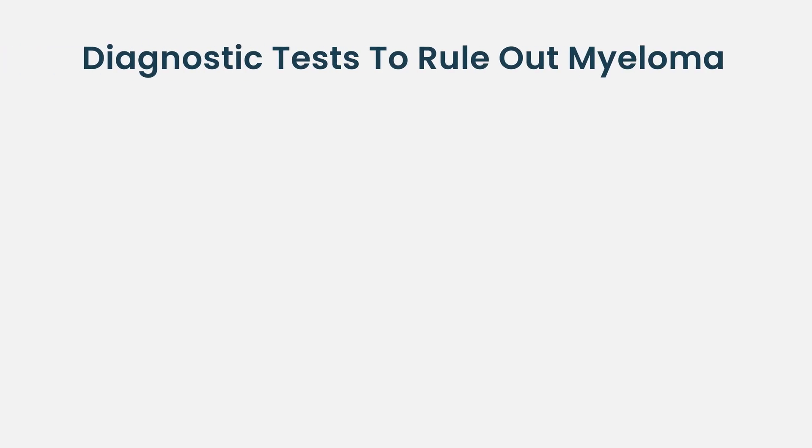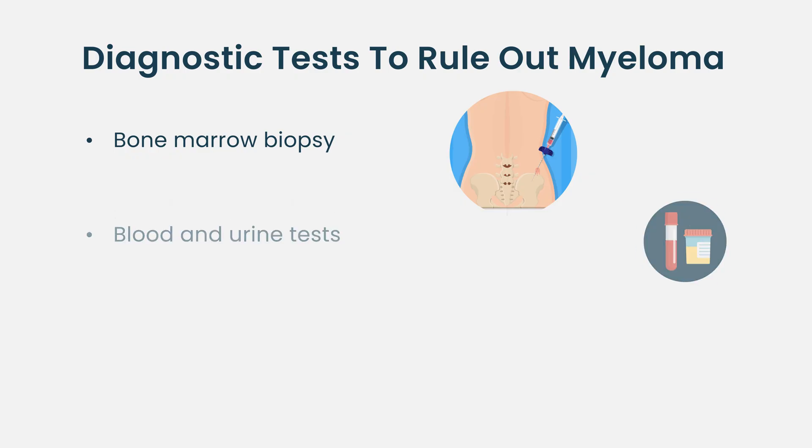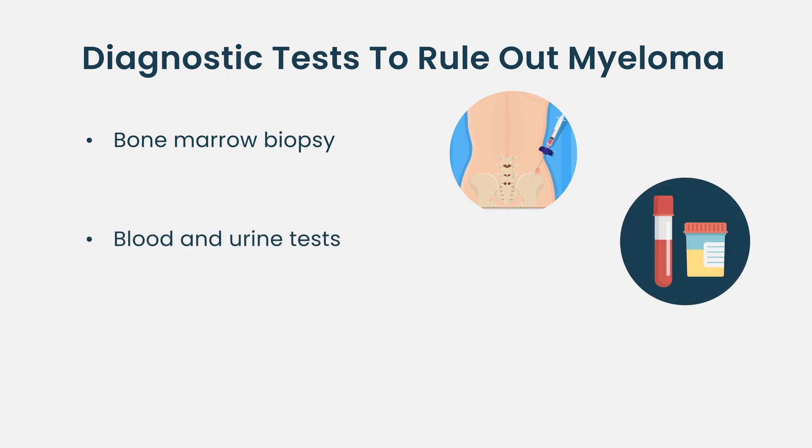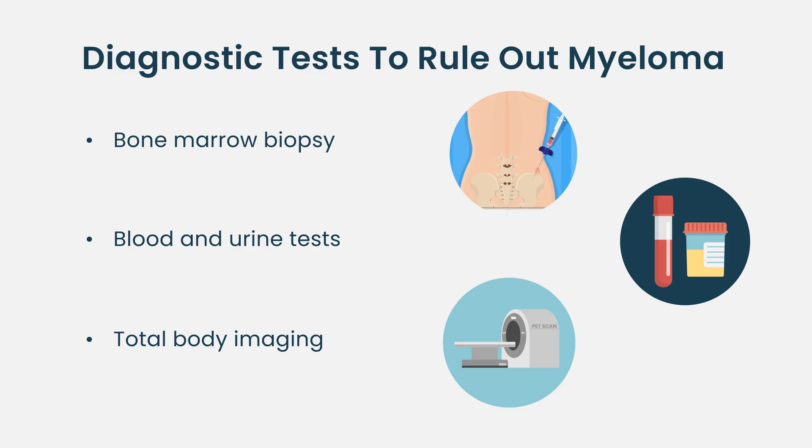When we find a plasmacytoma, we have to evaluate the full extent of disease — where there's smoke, there's fire. We must make sure someone doesn't have multiple myeloma, because the treatments are very different. This includes a bone marrow biopsy, blood and urine testing for a gammopathy, and total body imaging such as a PET-CT or diffusion-weighted MRI to confirm there are no other sites. A true solitary plasmacytoma means one site of disease, nothing else on imaging, and a bone marrow biopsy showing less than 10% plasma cells.